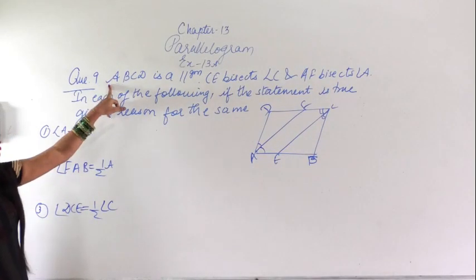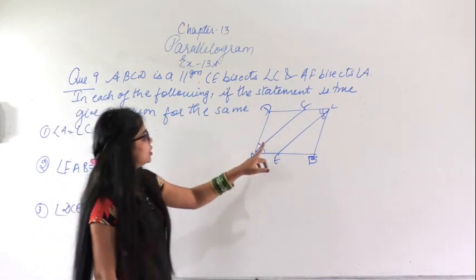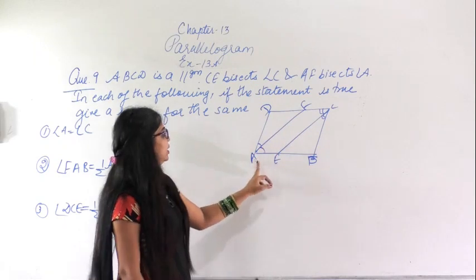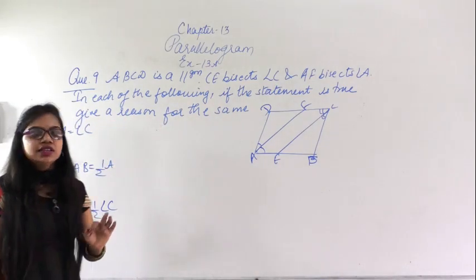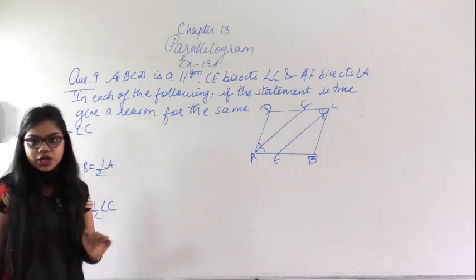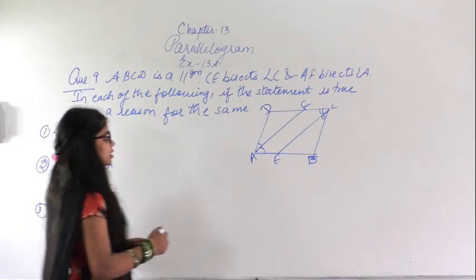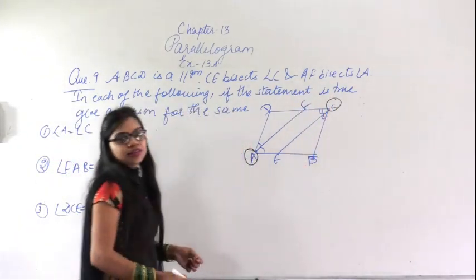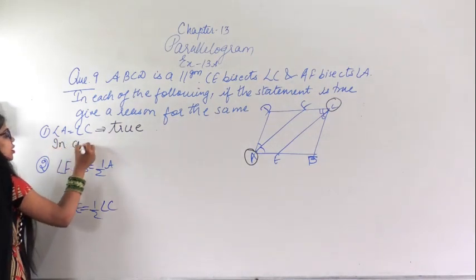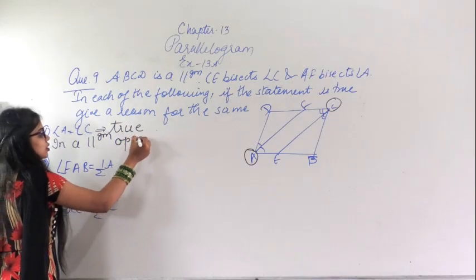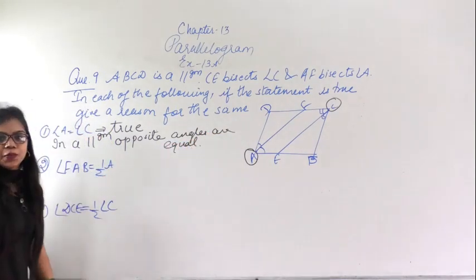This is question number 9. ABCD is a parallelogram. CE bisects angle C and AF bisects angle A. In each of the following, if the statement is true, give a reason. The first statement is angle A equals angle C. This statement is true because in a parallelogram, opposite angles are equal.